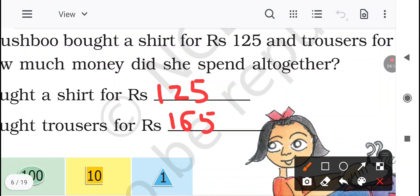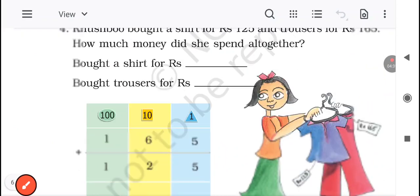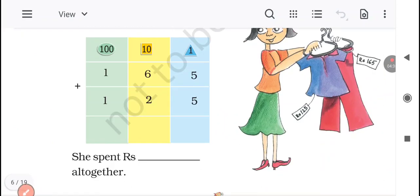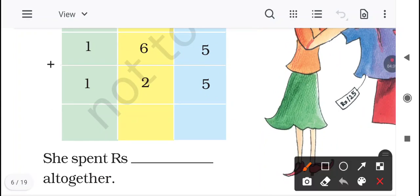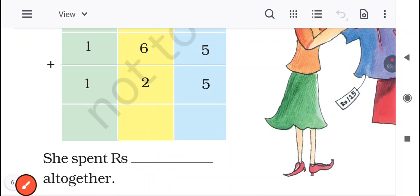So she wanted to know how much money did she spend altogether? Usne total kitna money spend kiya when she bought these? So what we have to do here? We have to do addition, right? Tabhi to humein pata chalega ki usne altogether kitna spend kiya money. So Rs. 165 plus Rs. 125. 5 plus 5 is equal to 10. 0 we will write here and 1 will be carry forward. 1 plus 6 is 7, 7 plus 2 is equal to 9. 1 plus 1 is equal to 2. So she spent Rs. 290 altogether. So usne kitna spend kiya? 290 altogether. Clear? Yes. Now let's move further.